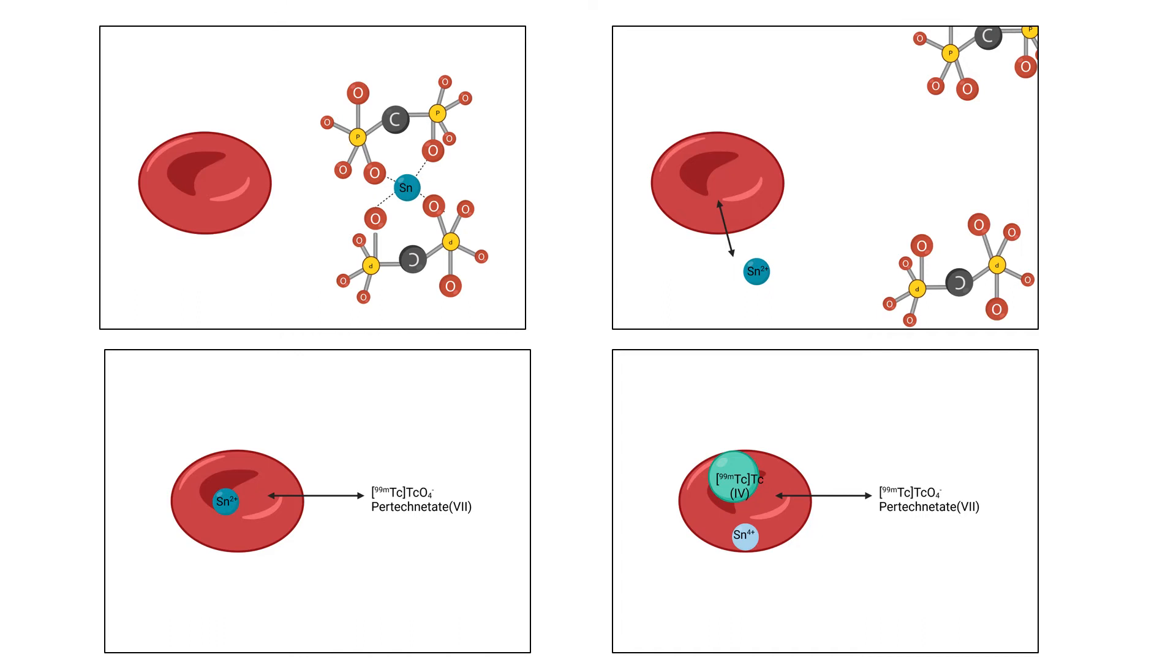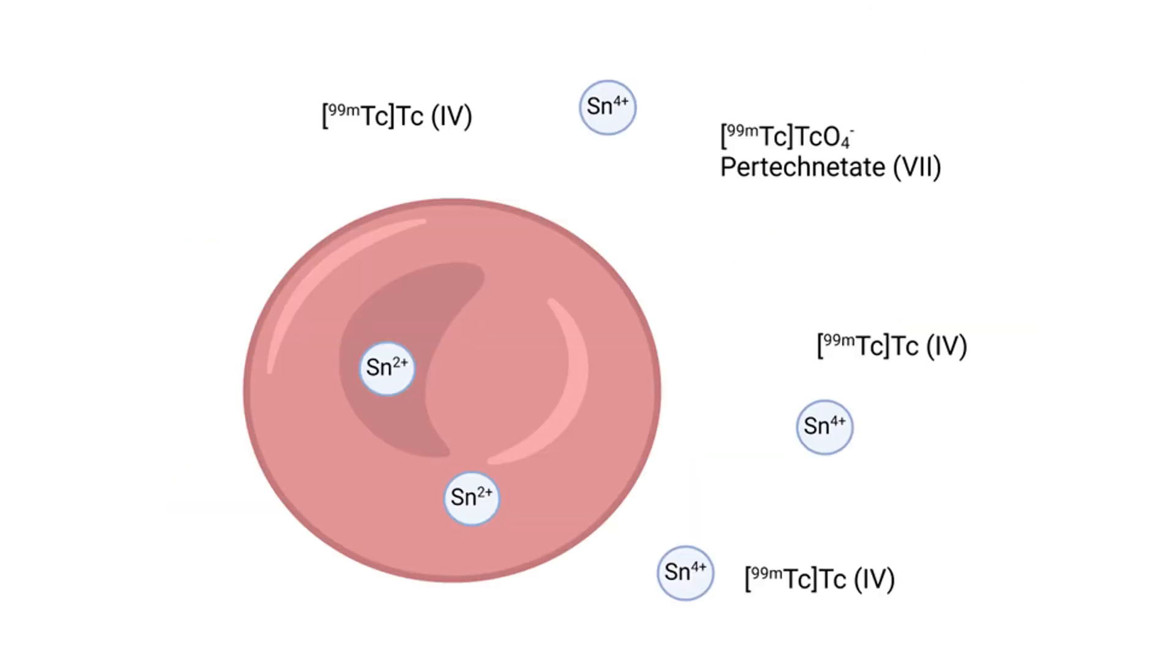Now your tin is inside the red blood cell. Your pertechnetate is now added to the red blood cell mixture or injected into the patient, it goes to where the tin is and the tin gives off its two electrons and that changes the pertechnetate to technetium 4 inside the cell.